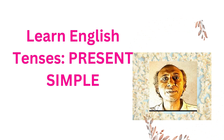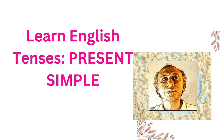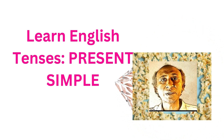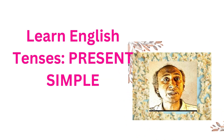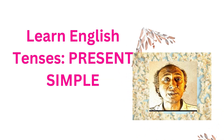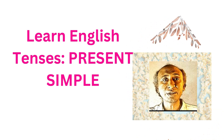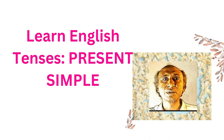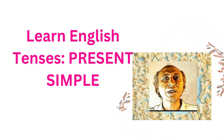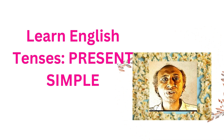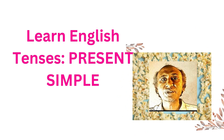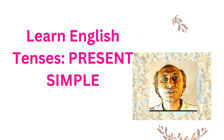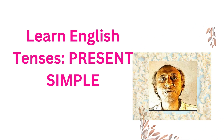It is formed using the base form of the verb. The structure is: subject + base form of verb, adding 's' or 'es' for the third person singular. For example: 'I play football every Saturday' indicates a regular action. 'She eats breakfast at 8 o'clock every morning' indicates a habitual action.